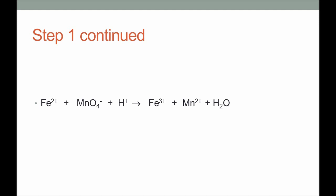The reaction produces Fe³⁺ and Mn²⁺ along with some water. First, write the equation and identify those elements that are undergoing a change in oxidation number. The oxidation number of iron is +2, manganese in manganate ion is +7, Fe³⁺ is +3, and Mn²⁺ is +2.